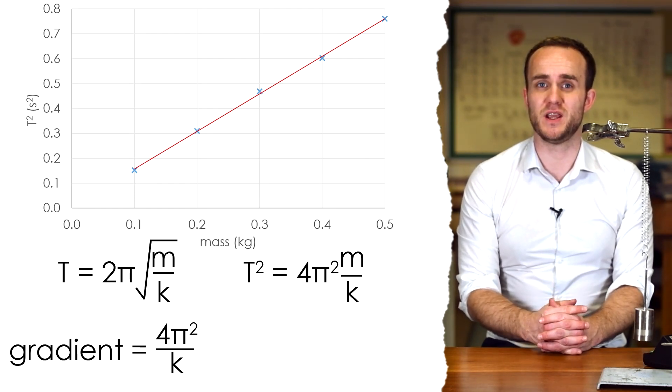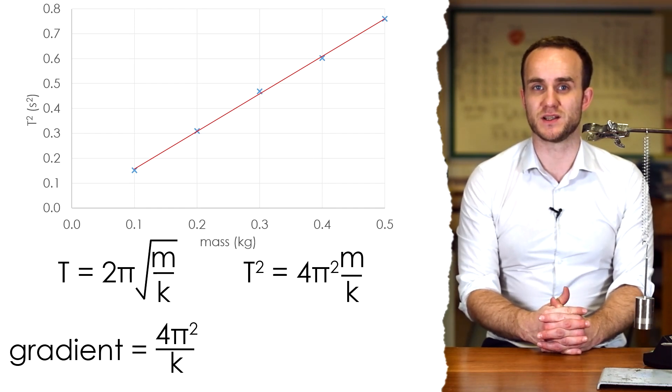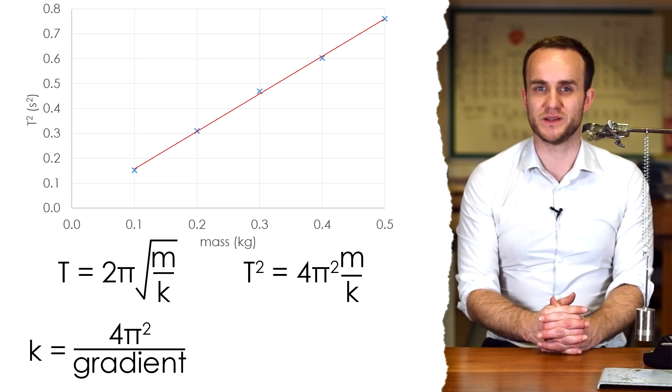The gradient of this is going to be equal to 4π²/k. Just like last time, I can swap the gradient and k over and see what k ends up being.